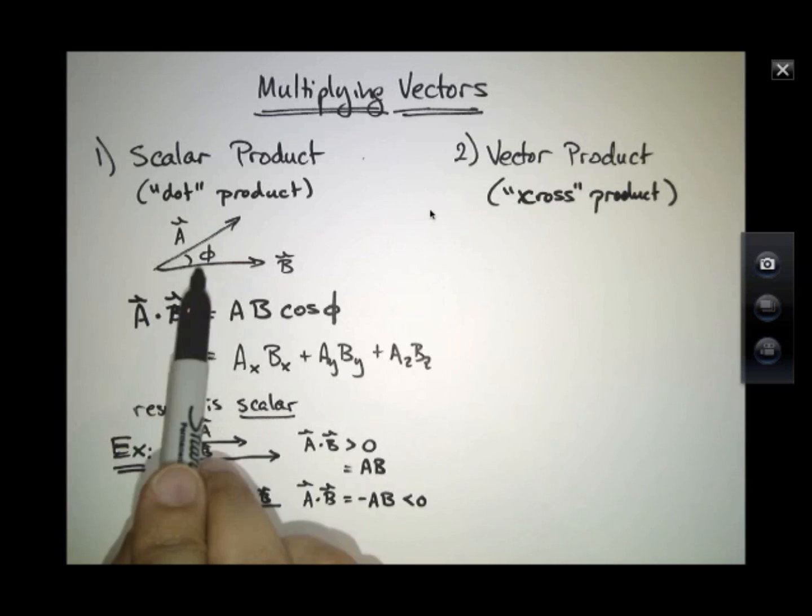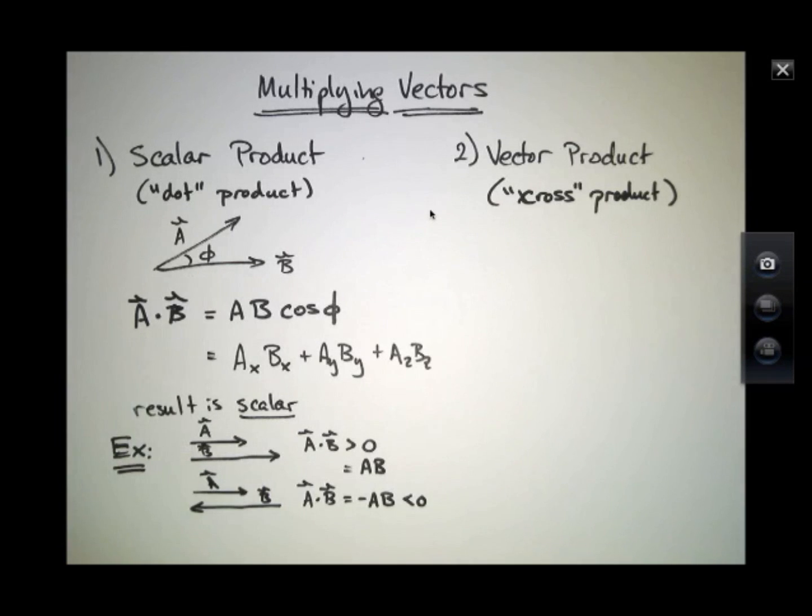Because now I've drawn them anti-parallel. In other words, the relative angle here, phi, is 180 degrees. They point back to back away from one another. The cosine of 180 degrees is minus one. Here's an example where A dot B is exactly zero because I've drawn a 90 degree angle between the two vectors.